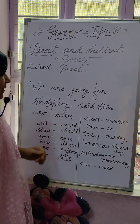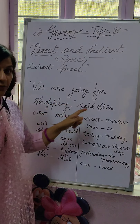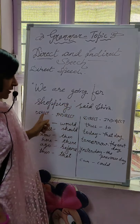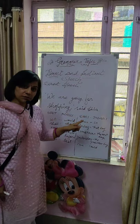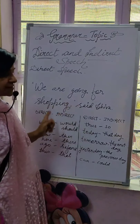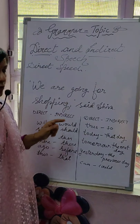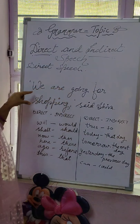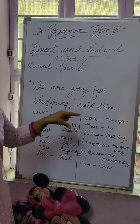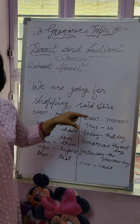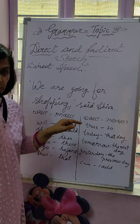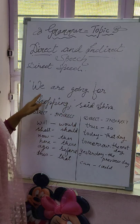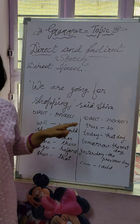For example, 'We are going for shopping,' said Shiva. Shiva said these words, so they are taken as they are, as the speaker spoke. That's why it is called direct speech.